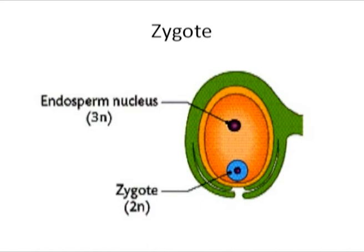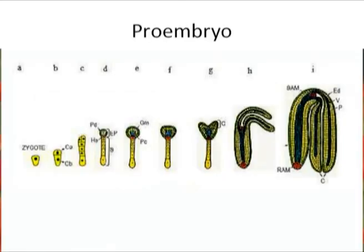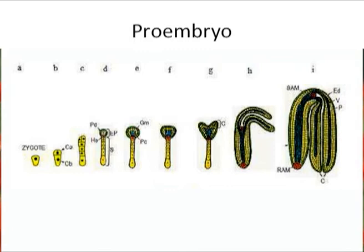In both dicots and monocots, the embryo develops from the zygote formed by the fusion of one male cell with the egg cell during fertilization. The diploid zygote undergoes divisions to form the embryo. The first division is transverse, forming two cells: the basal cell near the micropyle and the terminal cell near the endosperm — the two-celled proembryo. These two cells divide to form a four-celled proembryo in an inverted T-shape, as the basal cell divides transversely while the terminal cell divides longitudinally.